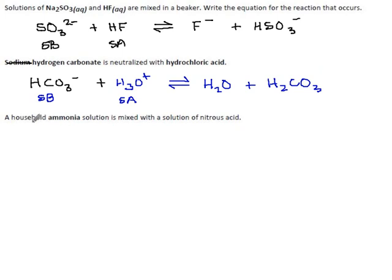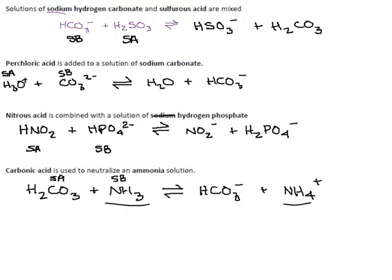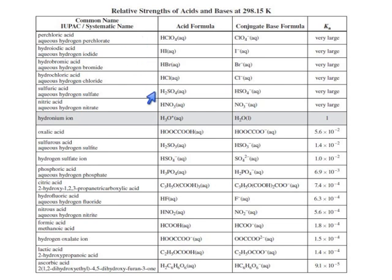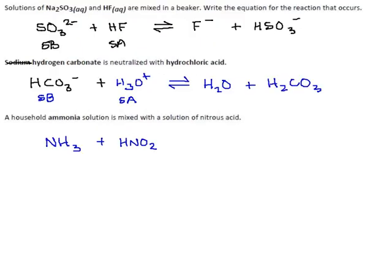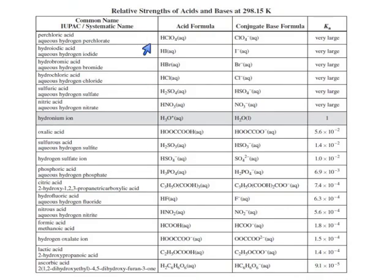Finally, an ammonia solution is mixed with nitrous acid. Ammonia is NH₃; nitrous acid is HNO₂. HNO₂ is not a top-six acid — nitric acid is, but nitrous is not. Both contain hydrogen so theoretically both could be acids. Reading down the left side: HNO₂ or ammonia, HNO₂ or ammonia — nitrous acid HNO₂ is our strongest acid.